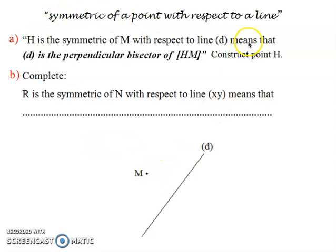How do I draw H? First, I draw a perpendicular from M to D. By definition, perpendicular bisector must pass through the midpoint of MH. So M is on this side, and D passes through the midpoint. This is the midpoint. H must be on the other side at the same distance. So I extend it in a way that these two distances are equal, and in this case line D becomes the perpendicular bisector of segment MH.